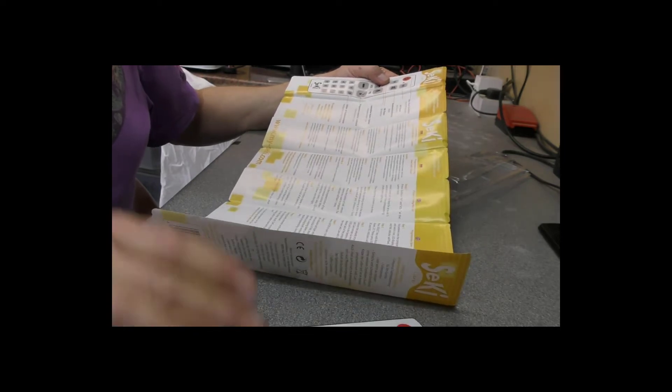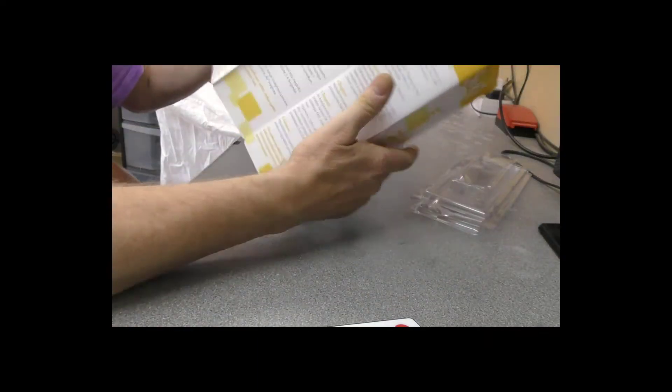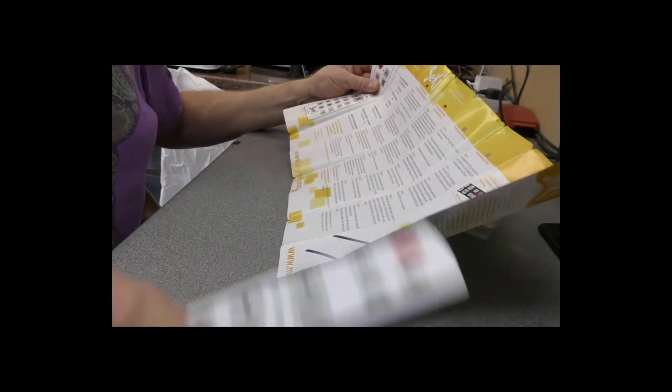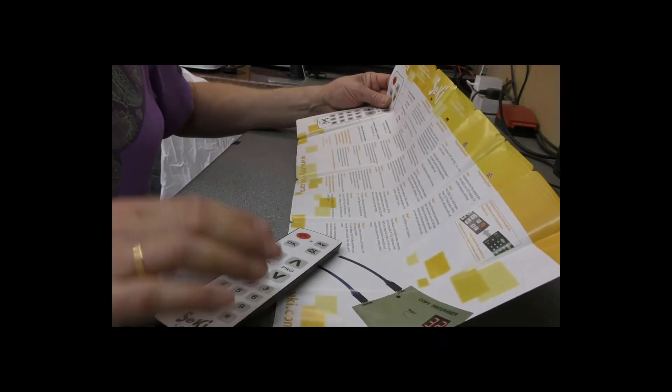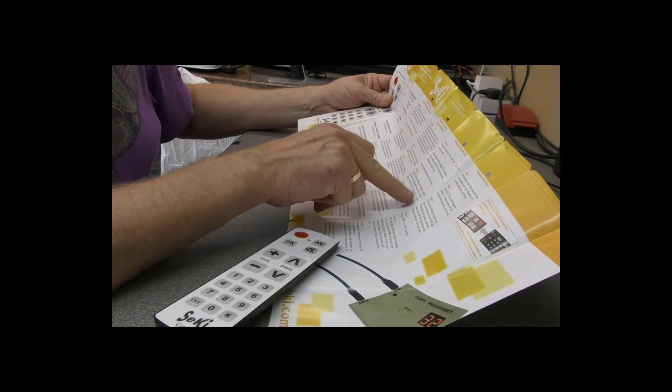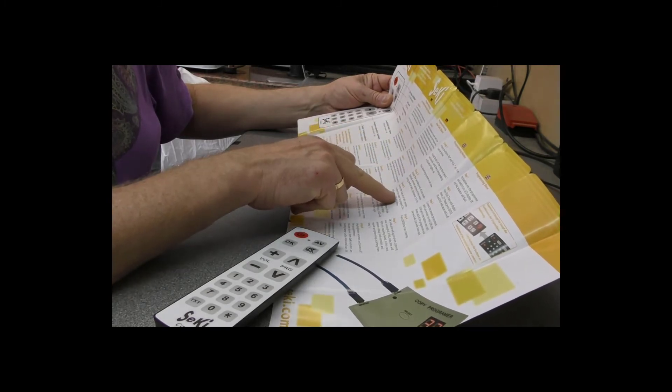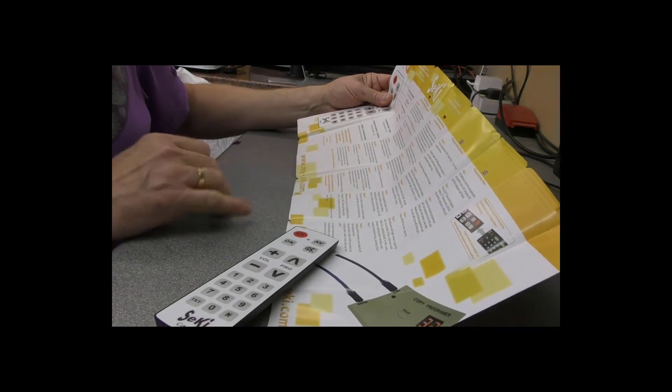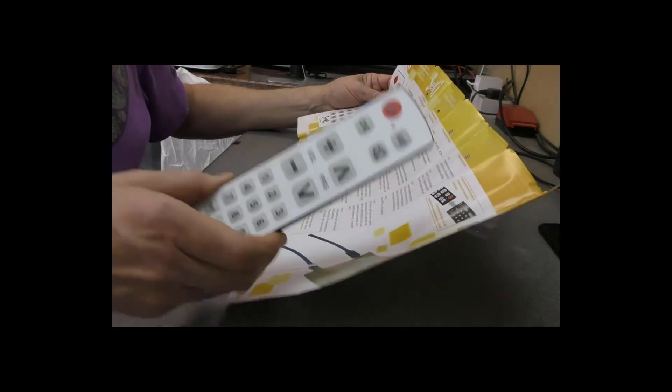I will have to read this. Not seeing any codes, perhaps we just have to search for a button that sends the sets off to standby. Oh, you just use the original remote to program the buttons. Well, that's even easier.